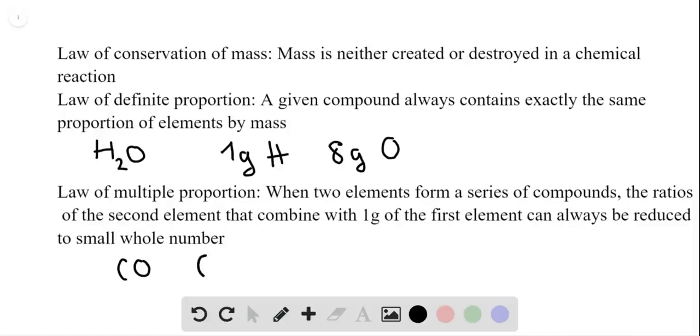And an example of that would be CO and CO2. So with 1 gram of carbon, the mass ratio of oxygen molecules between these two would be 1 to 2. Thank you!